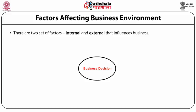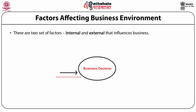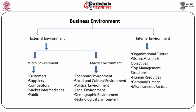There are two sets of factors — internal and external — which influence any kind of business. The diagram shows that any business decision is being influenced by both the internal as well as external environment. The components of the external environment include two broad kinds: micro environment and macro environment. In the micro environment we have customers, suppliers, competitors, market intermediaries, and public. In the macro environment we have economic environment, social and cultural environment, political environment, legal environment, demographic environment, and technological environment.